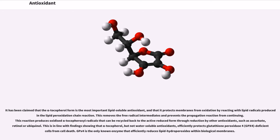This reaction produces oxidized alpha-tocopherol radicals that can be recycled back to the active reduced form through reduction by other antioxidants, such as ascorbate, retinol or ubiquinol. This is in line with findings showing that alpha-tocopherol, but not water-soluble antioxidants, efficiently protects glutathione peroxidase 4 (GPX4) deficient cells from cell death. GPX4 is the only known enzyme that efficiently reduces lipid hydroperoxides within biological membranes.